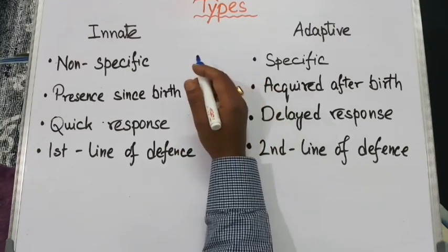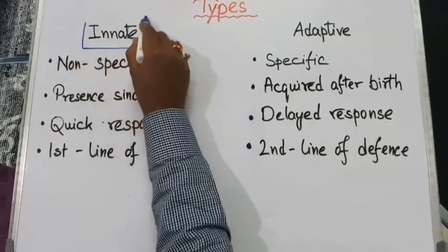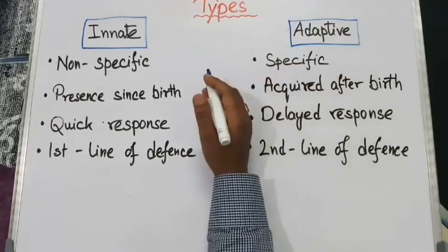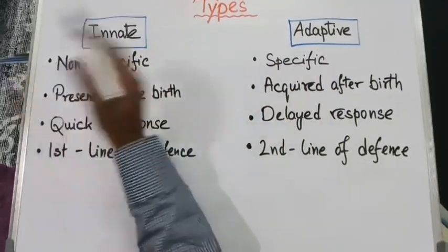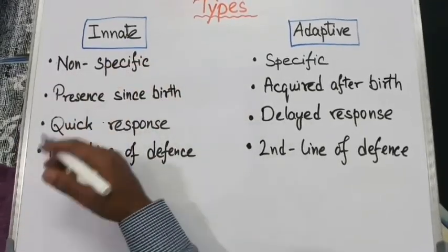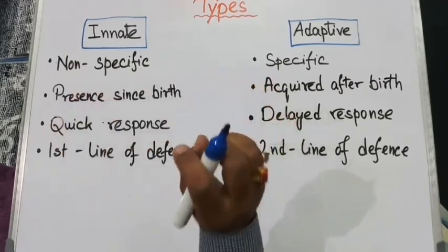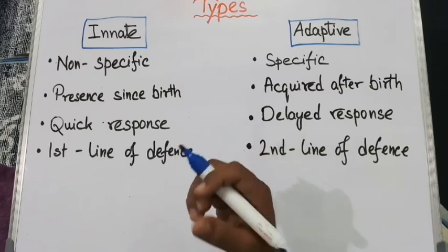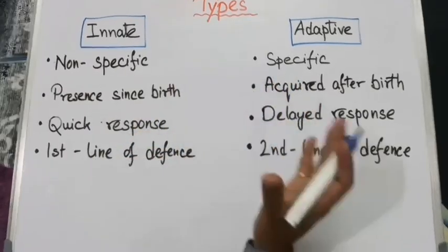Our immune system can be divided into two types: innate immune system and adaptive immune system. The innate immune system is non-specific, meaning it does not identify any individual pathogen; rather, it mounts a generalized immune reaction to fight against all types of foreign invaders in our body.